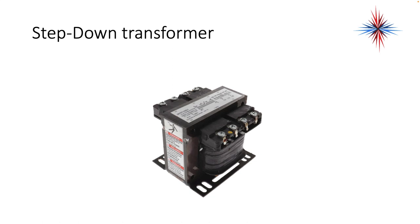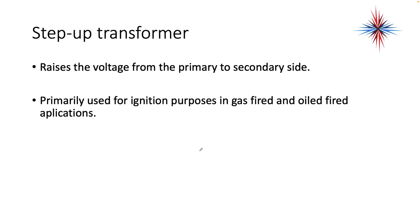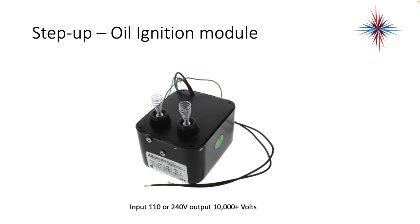This is an example of a step-down transformer with multiple taps on each side. Step-up transformers raise the voltage from the primary to the secondary side, primarily used for ignition purposes in gas-fired and oil-fired applications. This is an example of a step-up oil ignition module. My two black wires are going to be 120 volts or 240 volts depending on the system and the label. My output is these two springs here that connect to the igniters — this is going to be a 10,000-volt output, and some are going up as high as 14,000 and 16,000 volts. Very little amperage, but it's enough to give you a real jolt. Do not put your meter on these outputs to measure voltage — there are other ways to do it.